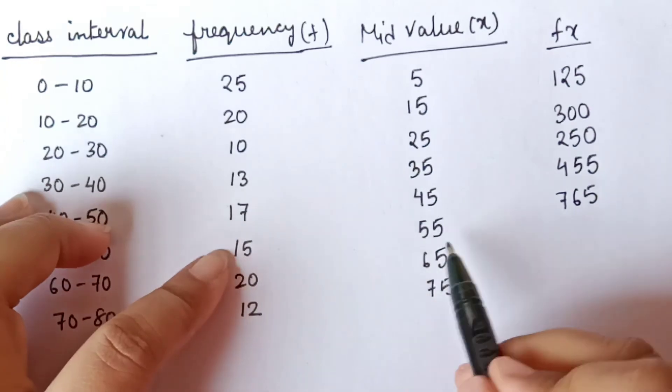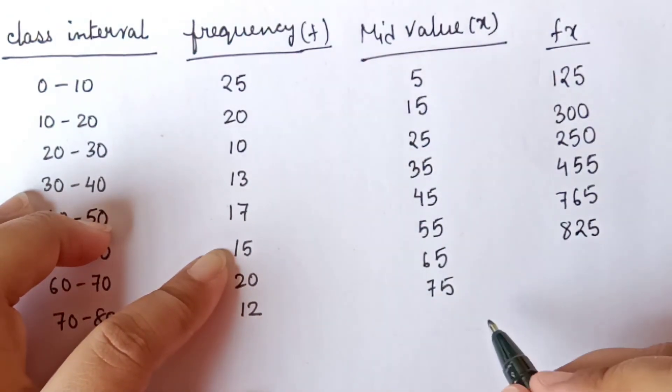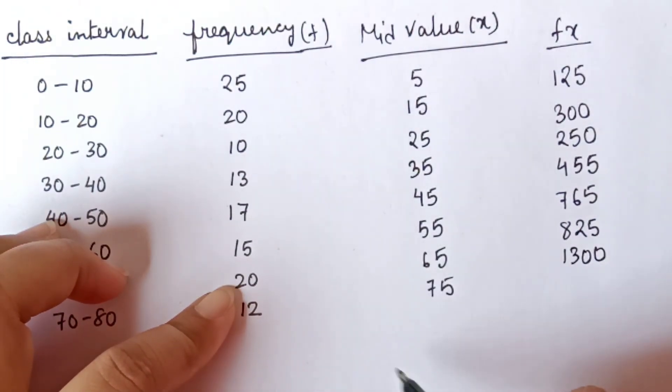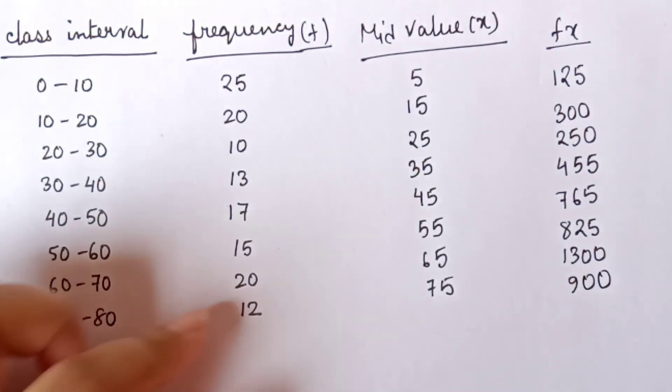15 into 55, 825. 20 into 65, 1300. Then 12 into 75, 900.